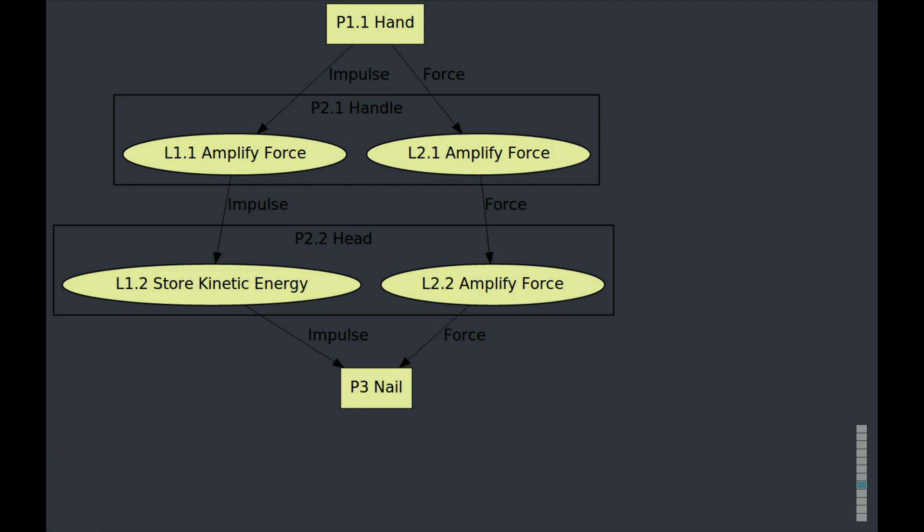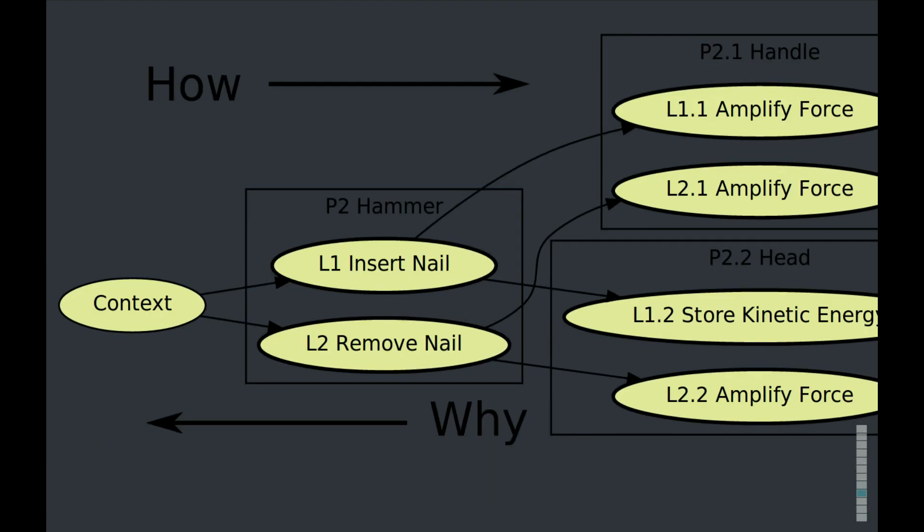Breaks down onto amplify force and store kinetic energy. And remove nail. What does it break down onto? Amplify force, amplify force. So this is a function block diagram notation. We can see the function blocks the subsystems and we can see the functions that make them up. We can see what each subsystem does within the context of each level of the system.